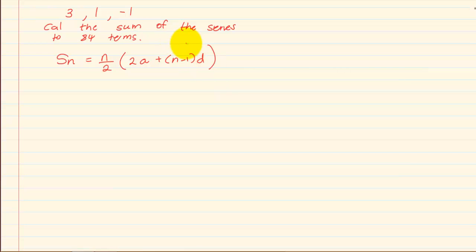Right. So we have the formula which is SN equals N over 2 open brackets 2A plus N minus 1 close brackets D. What do we have? You are going to start by writing your SN, N, A, and D.